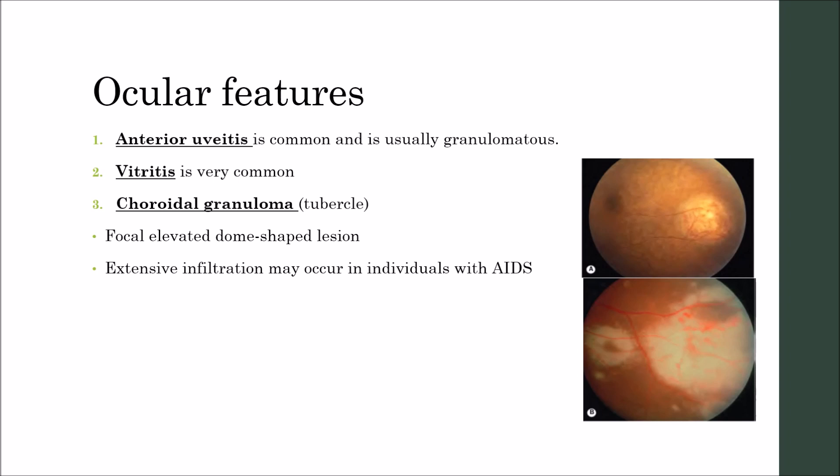Anterior uveitis is a common ocular feature and is usually granulomatous. Iris nodules may be present. Band-shaped keratopathy is very common and may be secondary to anterior, intermediate, or posterior uveitis, where the primary focus lies.